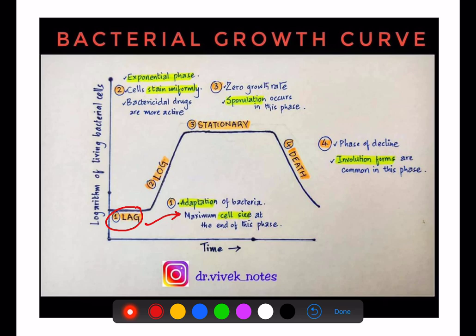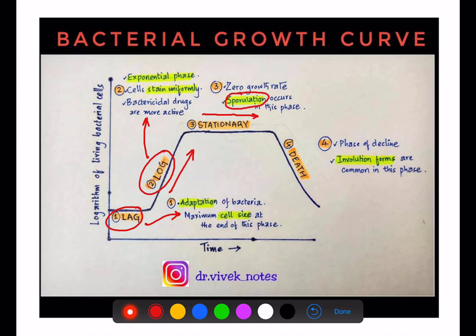The second phase, logarithmic phase, is also called exponential phase. Here, cells stain uniformly and bactericidal drugs are most active. The third phase is stationary phase, characterized by zero growth rate, and importantly, sporulation occurs here. The final phase is the death phase, also called the phase of decline, where involution forms are most common.